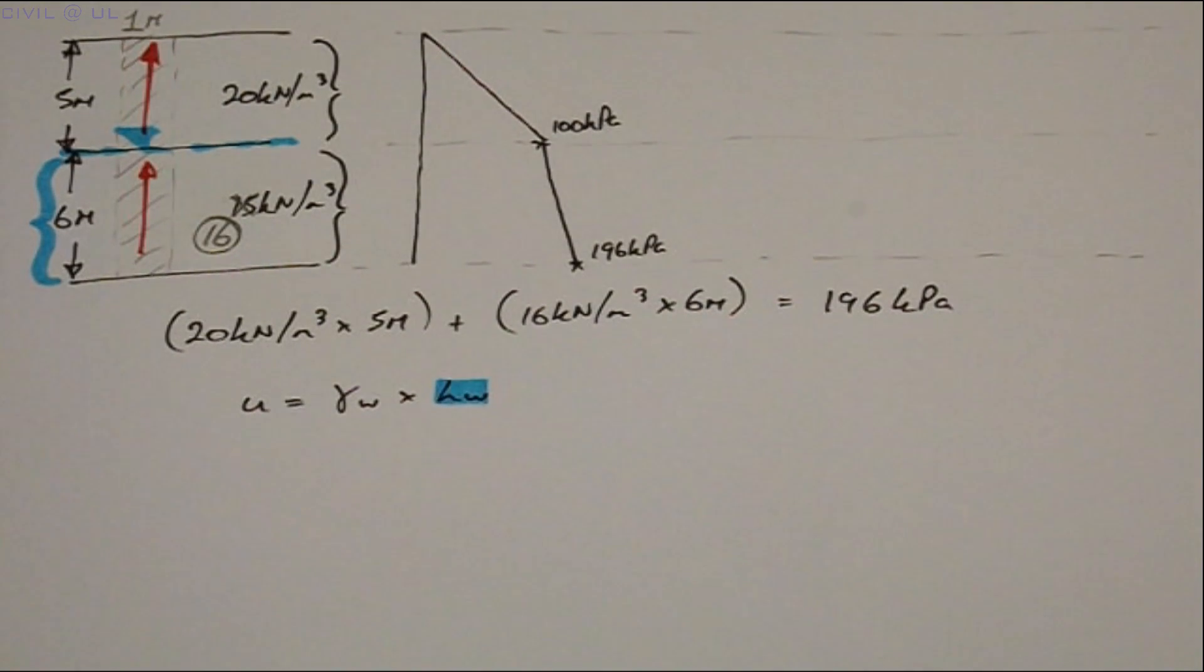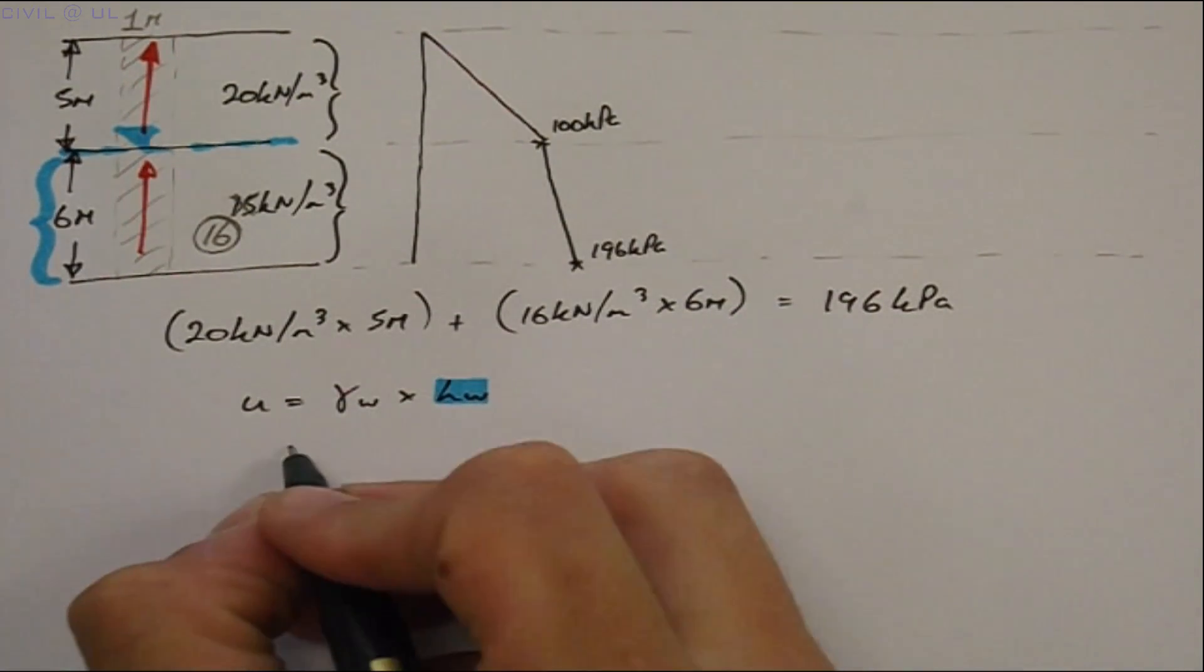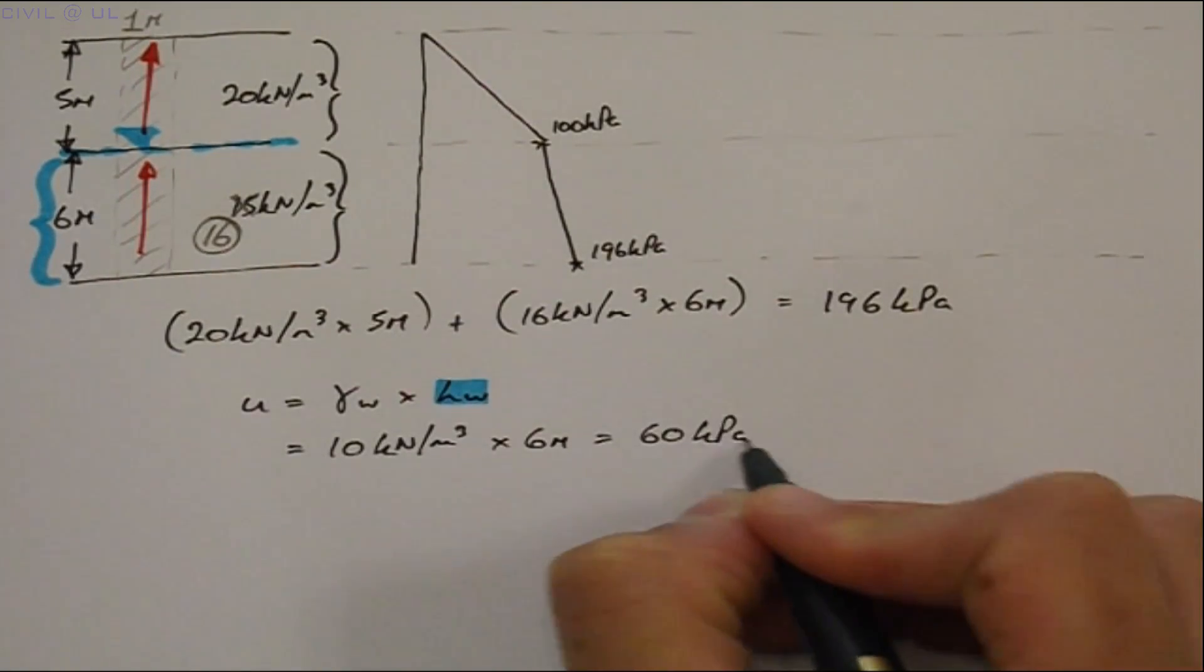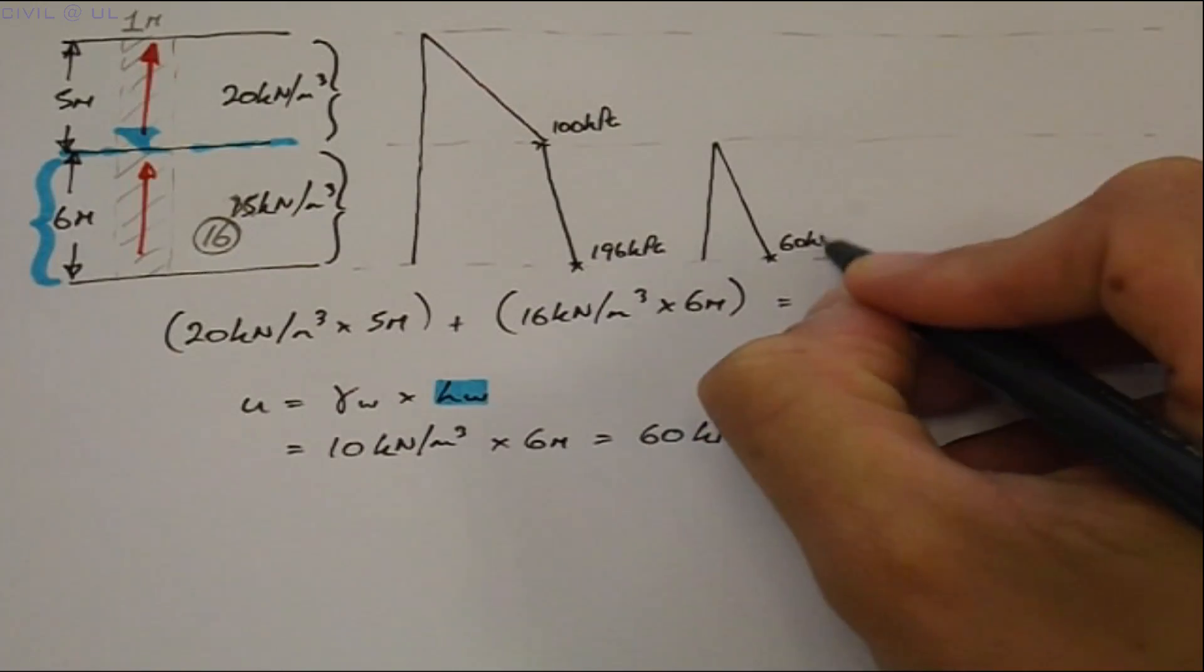So taking the unit weight of water to be 10 kilonewtons per meter cubed the hydrostatic or pore water pressure U is equal to 10 multiplied by 6 or 60 kPa. This can also be shown graphically.